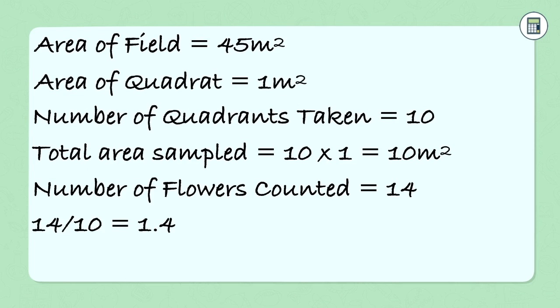14 divided by 10 gives us 1.4. So there is around 1.4 flowers in a typical 1 meter squared of this field. If the area of this field is 45 meters squared then 1.4 multiplied by 45 will give us an estimate of how many purple flowers there are in the field. So 1.4 multiplied by 45 is 63. So our estimate of that field is 63 flowers.